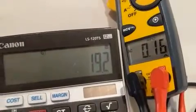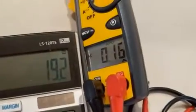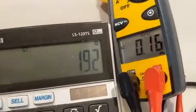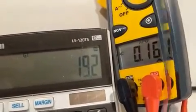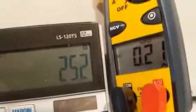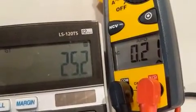So at the low setting of 2,400 lumens, it's 19.2 watts, 0.1 amps. At the medium setting, 3,300 lumens, it's 25.2 watts, 0.21 amps.